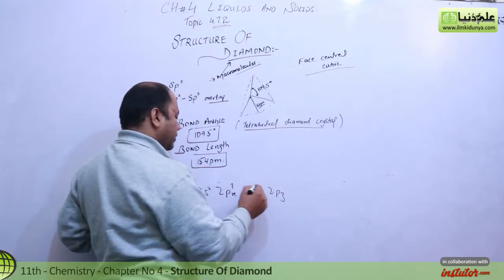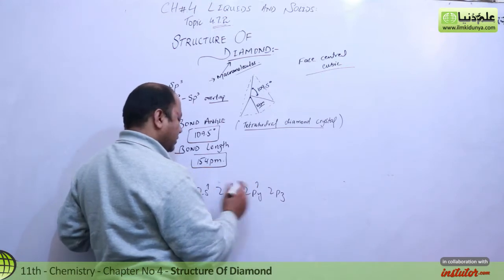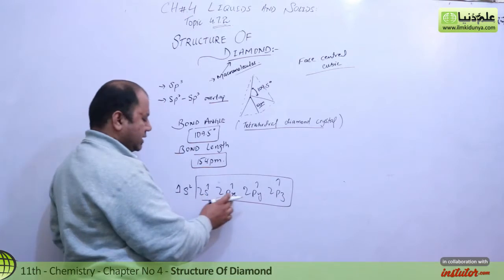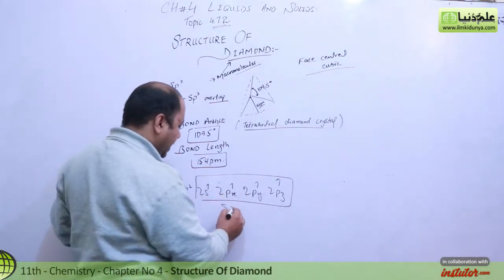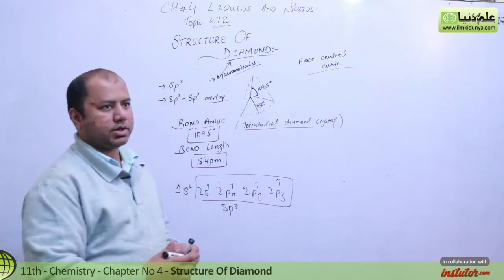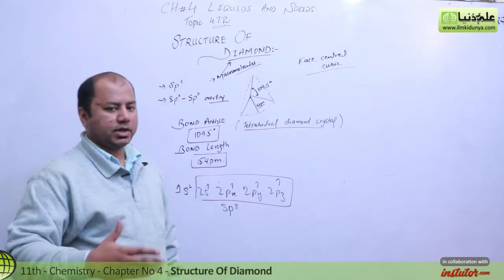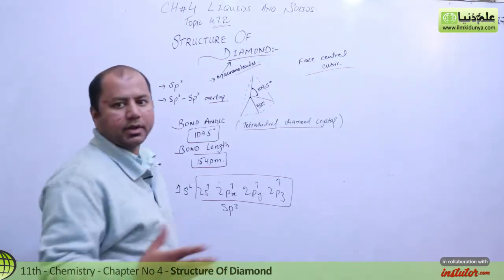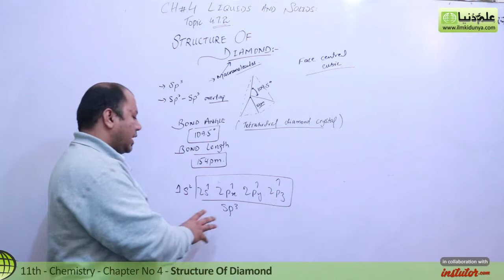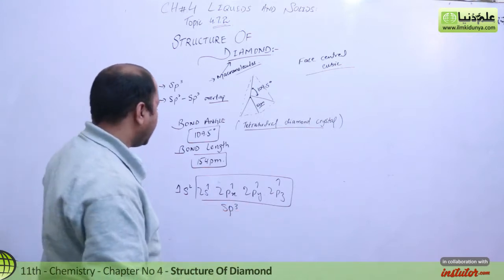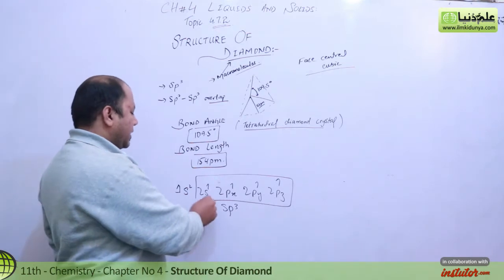These are the outer shell, the second outer shell. That's the sp3 hybrid. When you talk about hybridization, you have to understand it again. The sp3 hybrid of carbon will be discussed.